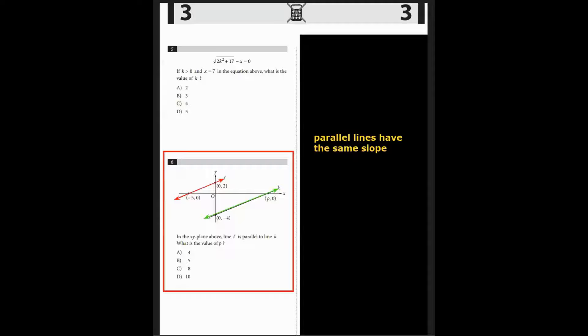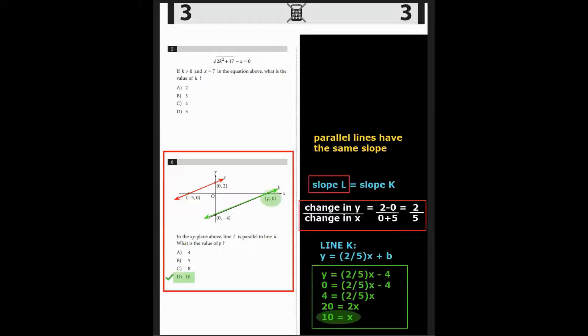Question 6. In the xy-plane above, line L is parallel to line K. What is the value of p? Well, we know that if they're parallel, parallel lines have the same slope ratio. So the slope of line L equals the slope of line K.